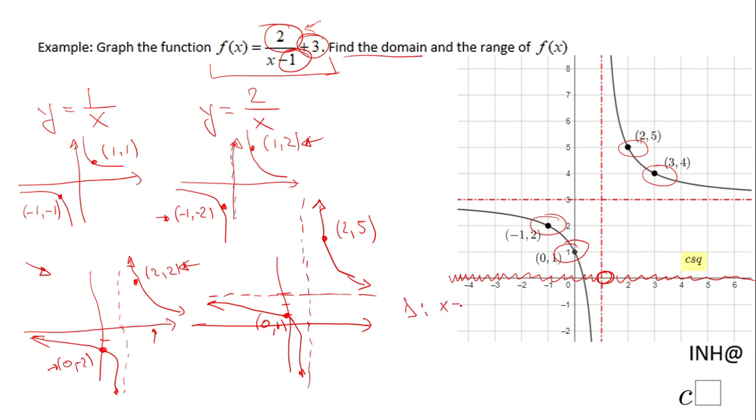So the domain is any number excepting that one. If you need the interval notation: negative infinity, one, union, one, infinity.